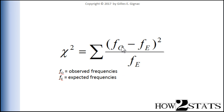The numerator is the observed frequencies — what you get in your data, the number of observations. For example, seven observations of correct taste testings between Pepsi and Coke, minus the expected frequencies under the null hypothesis. The expected frequencies represent what you would expect to see if there were no effect at all in the population. In this case, if there are ten trials, it would be five correctly guessed Pepsi versus Coke taste testings.